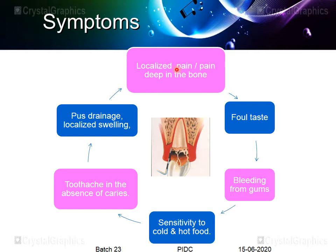Patients may complain of localized pain or pain deep in the bone, suggesting pocket presence. Other complaints include foul taste and bleeding gums — a major complaint indicating plaque accumulation and periodontal destruction. There may be sensitivity to hot or cold food, toothache in the absence of caries suggesting pockets, pus drainage, or localized swelling.